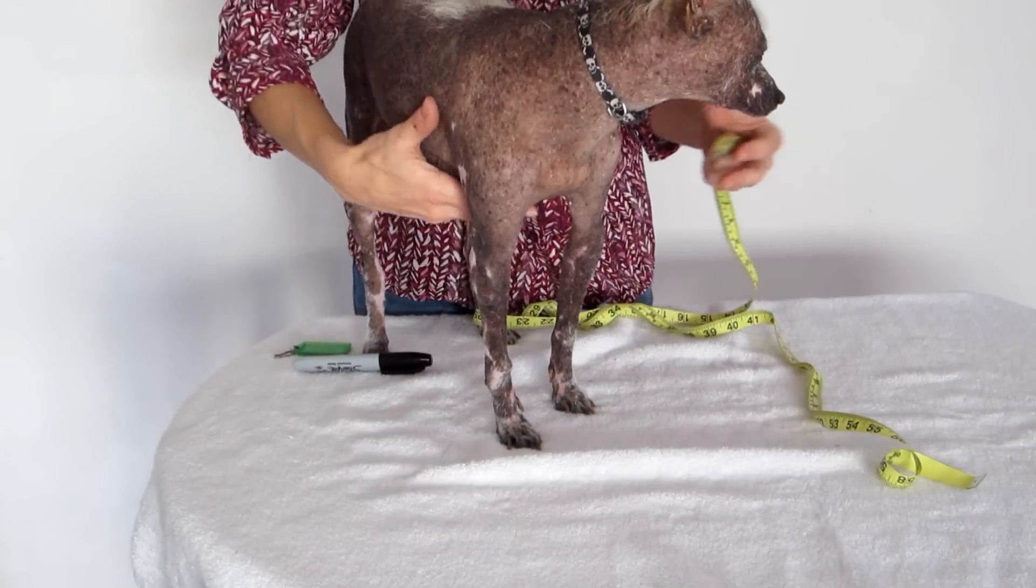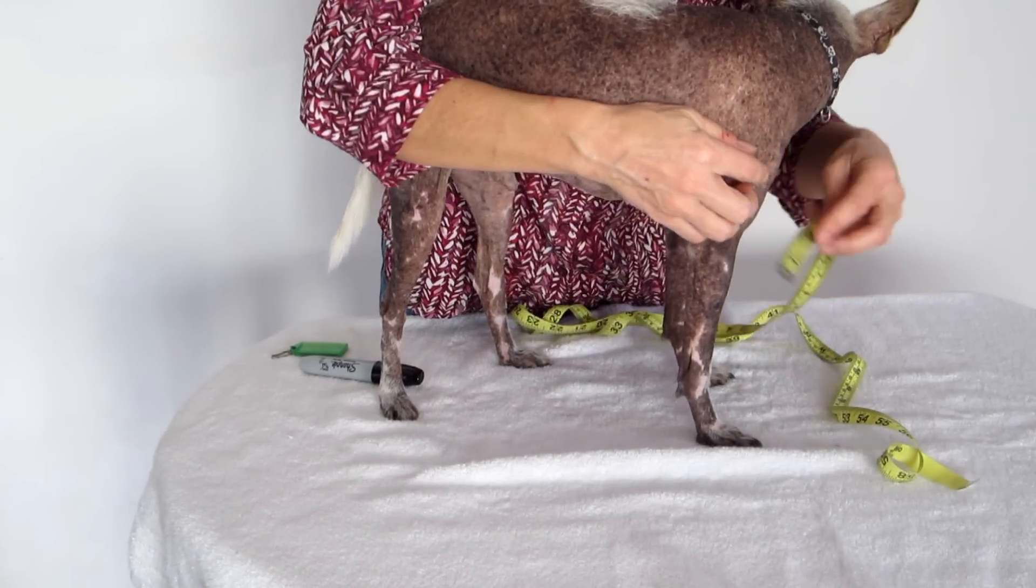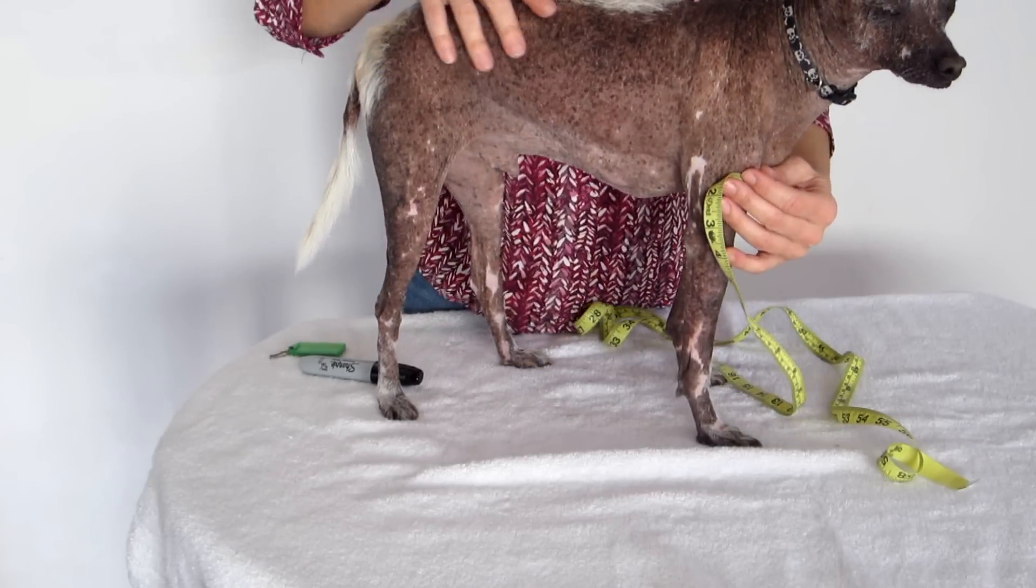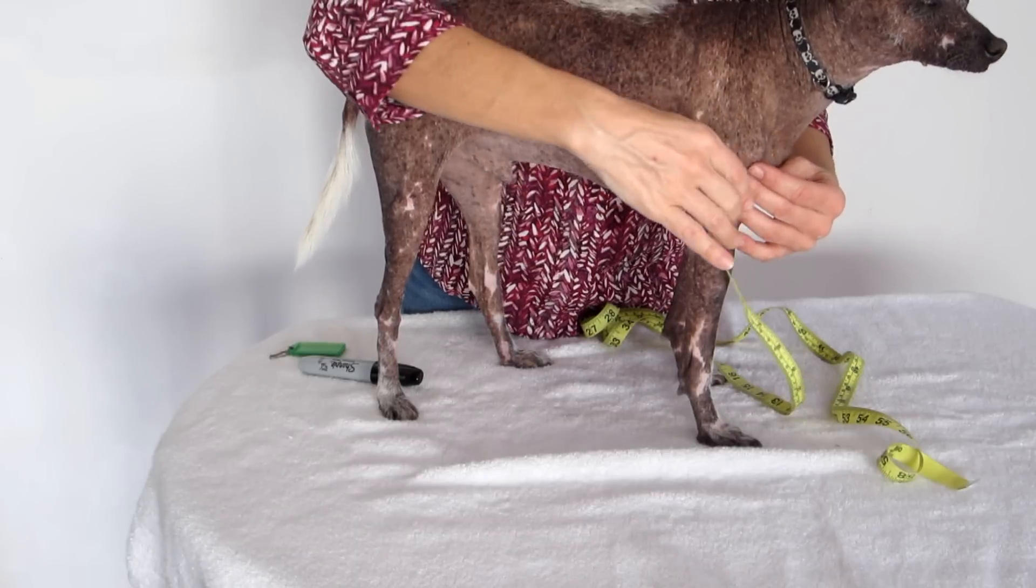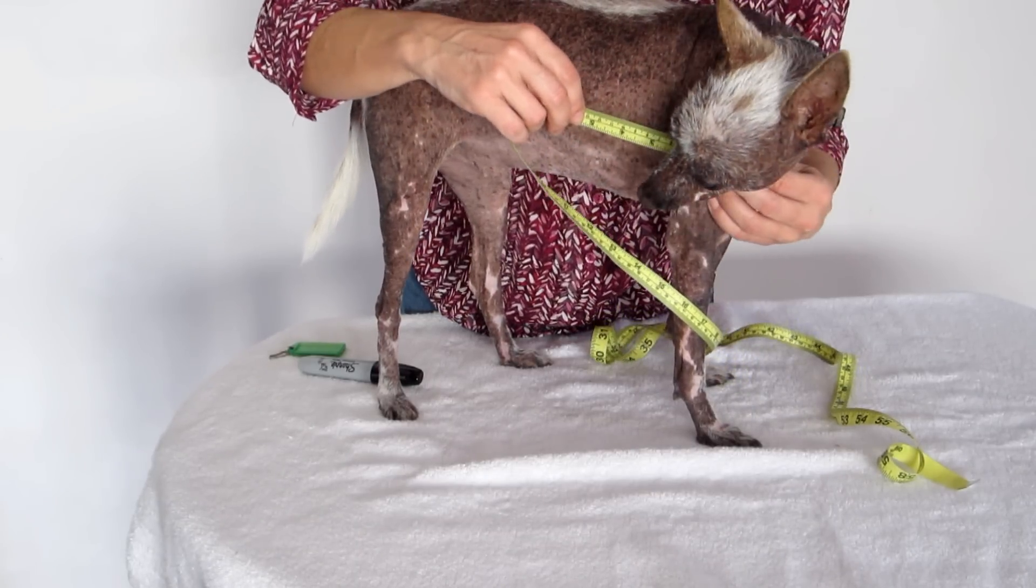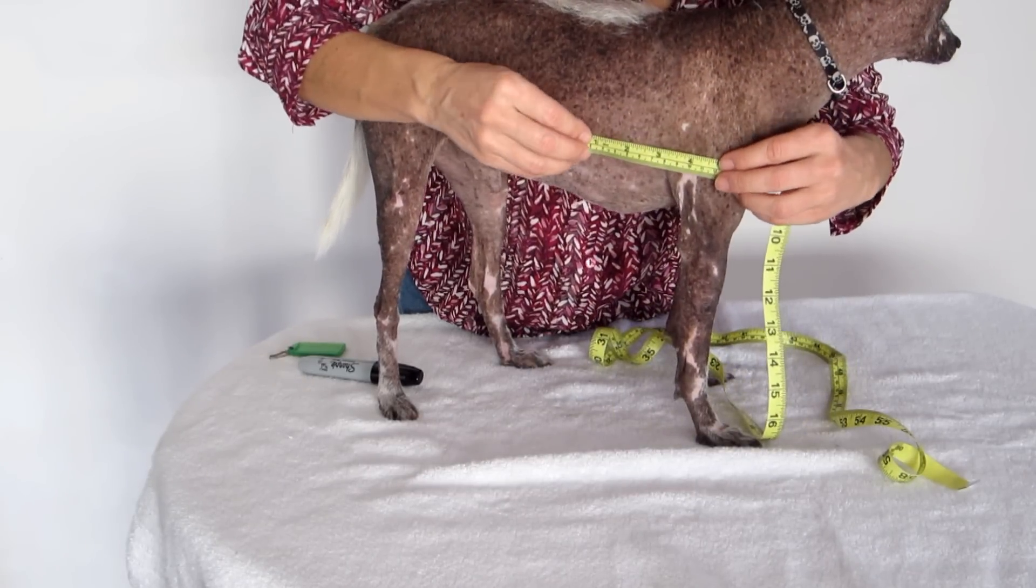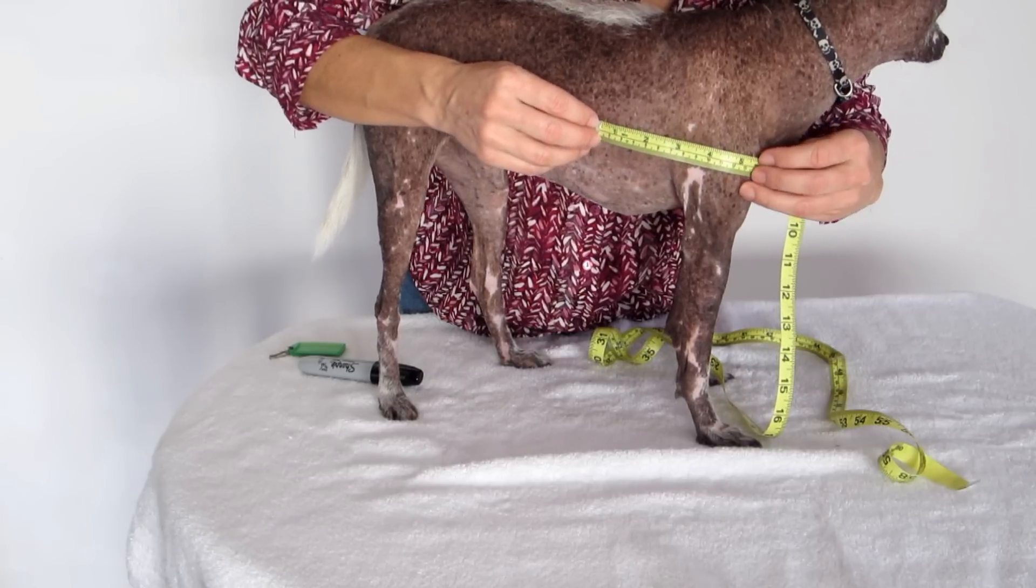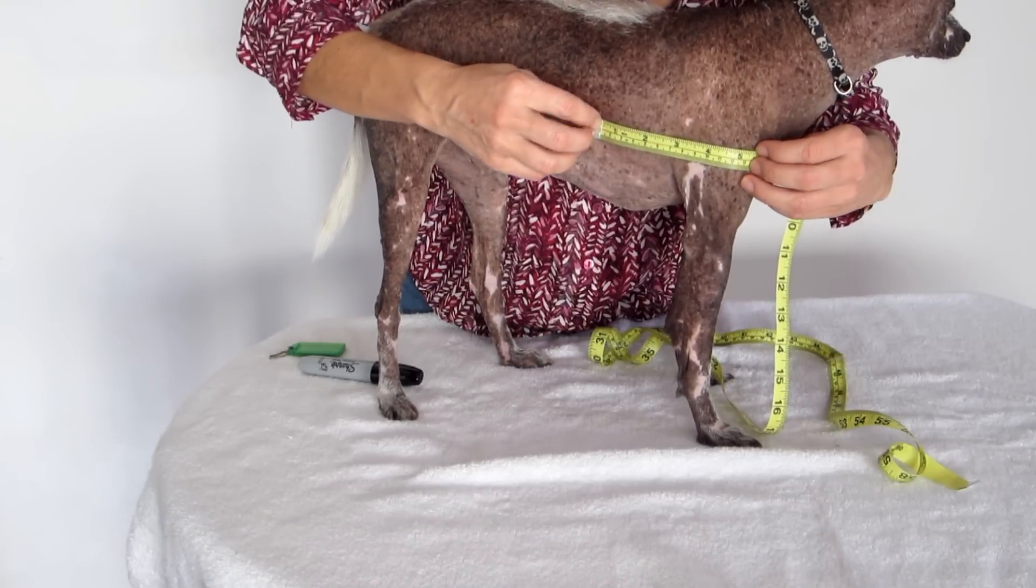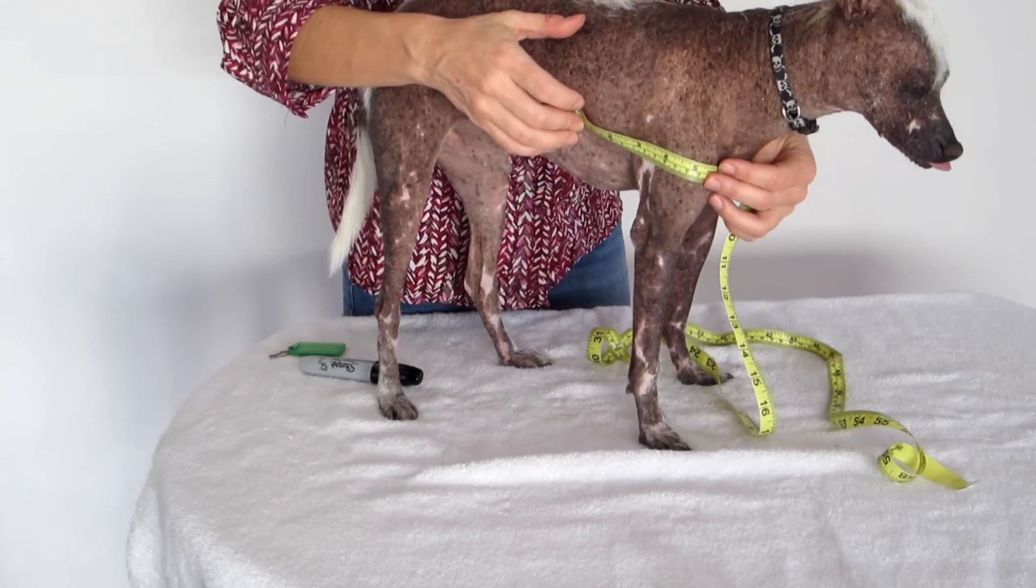Then two more measurements. You'll take it from the rotation point to the widest part of his chest. Looking at him from the top, you can kind of see where the wide part of his chest is. So a perpendicular measurement. Starting at the widest part of his chest, or vice versa, from the rotation point, measure that distance and write down the measurement.